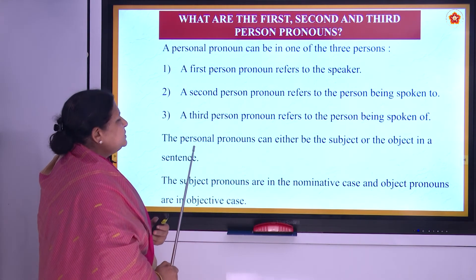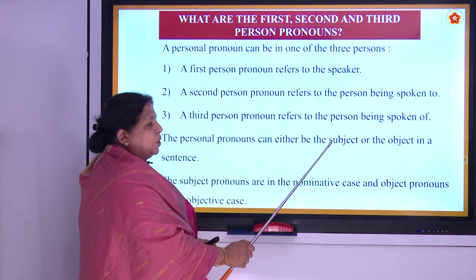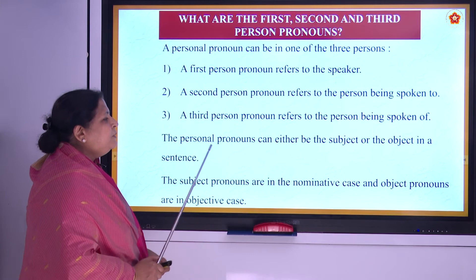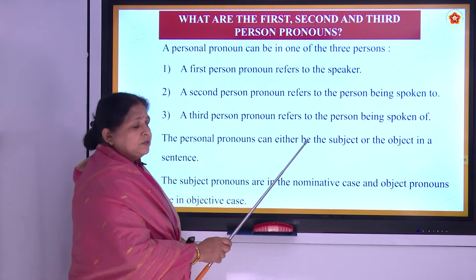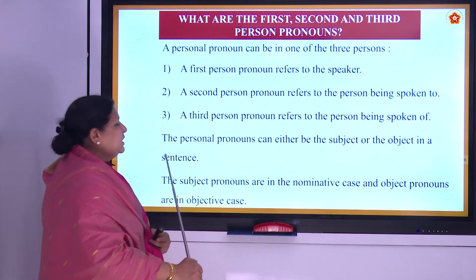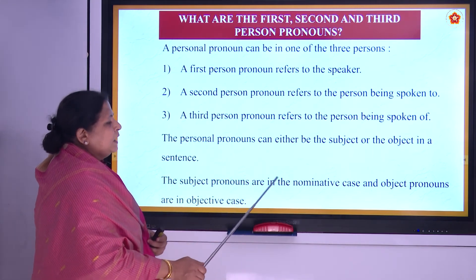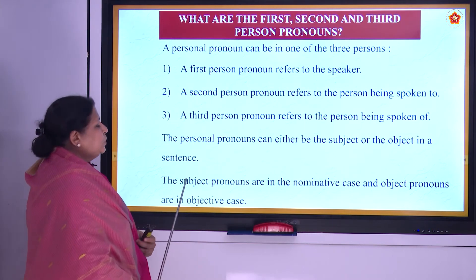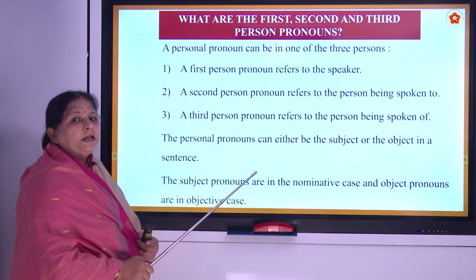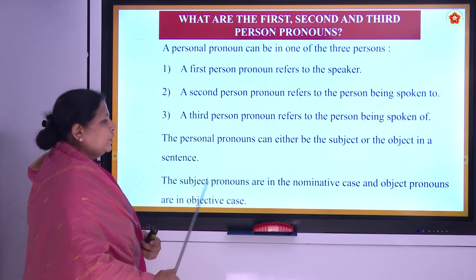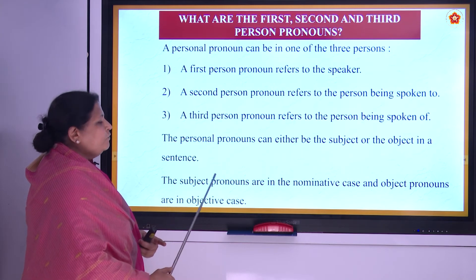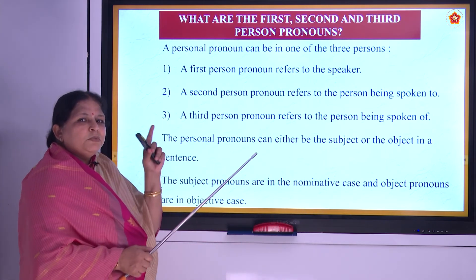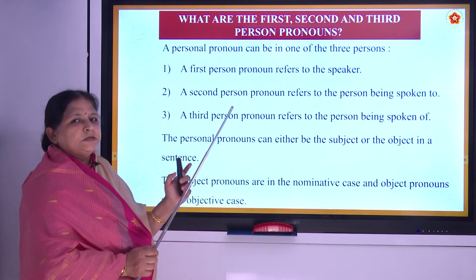The personal pronoun can either be the subject or the object in a sentence — this is very important. The subject pronouns are in the nominative case and the object pronouns are in the objective case. Nominative means you are nominating a person; objective means you know that it is there.